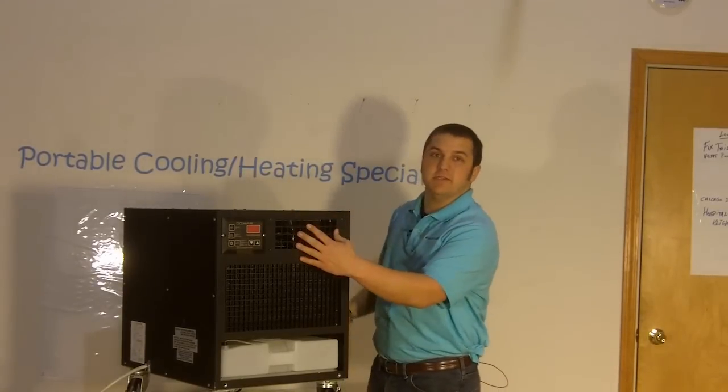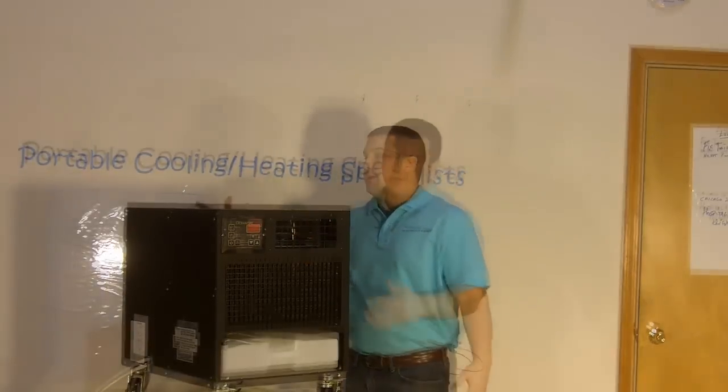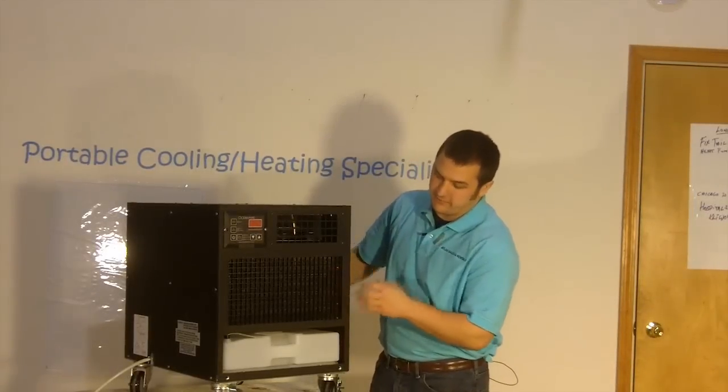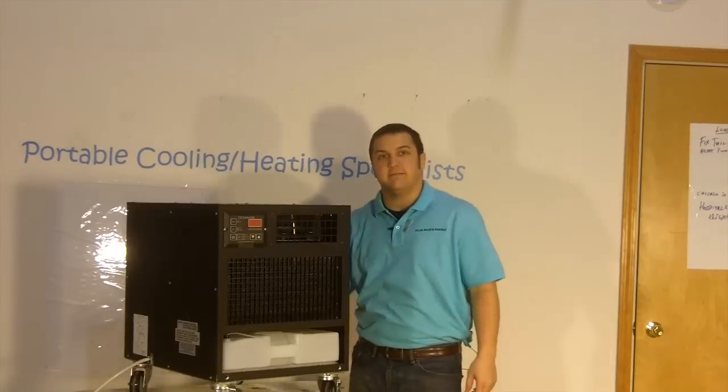Basically, what we're going to have is 12,000 BTUs of cold air supply in the front, two different air filtration systems in the front and rear with a two-gallon condensate tank available.